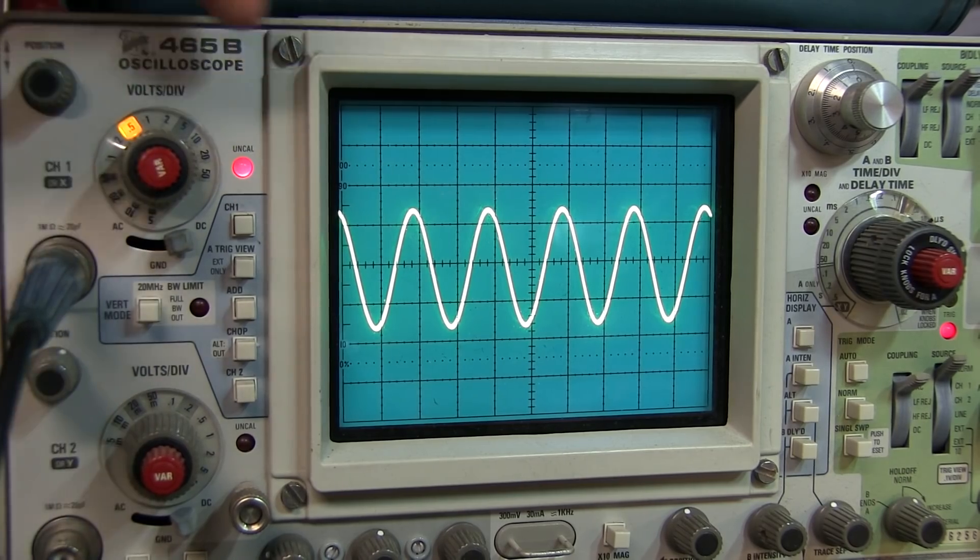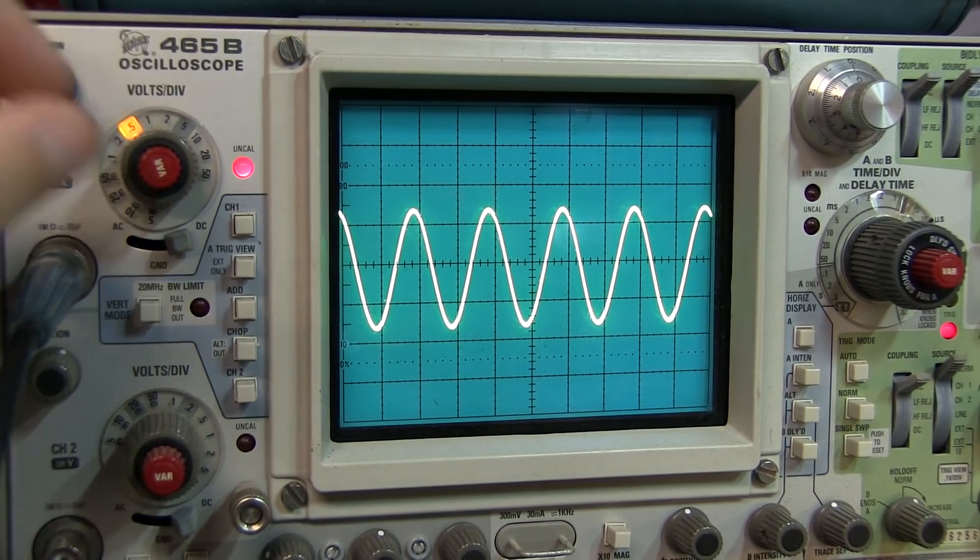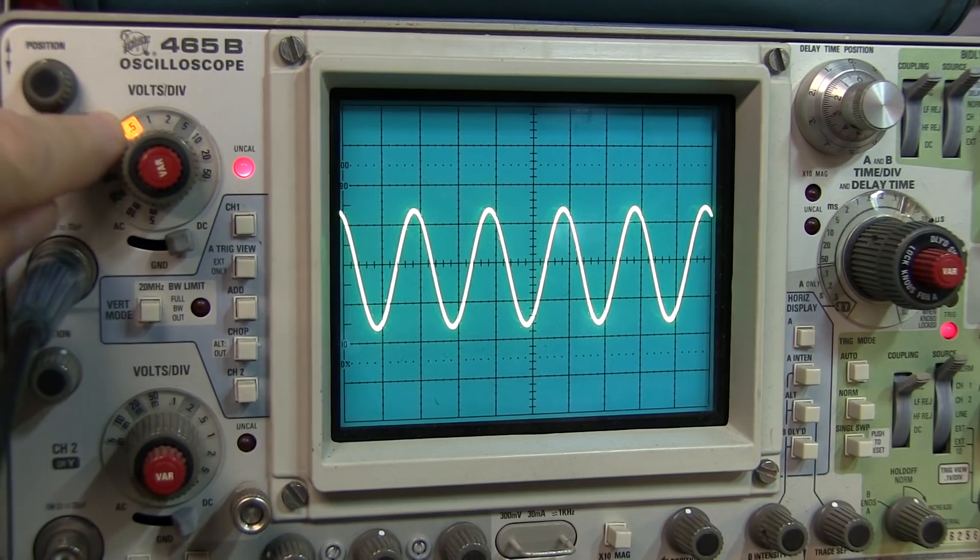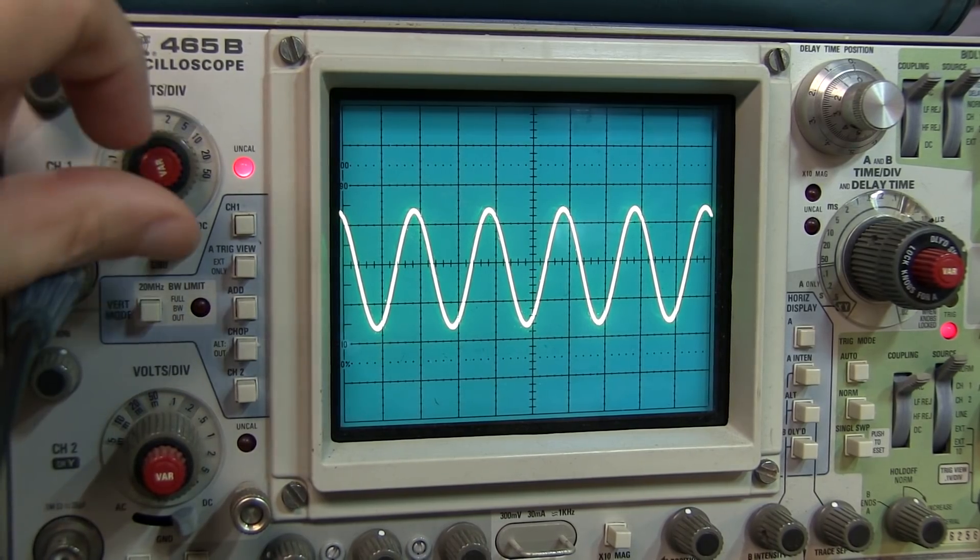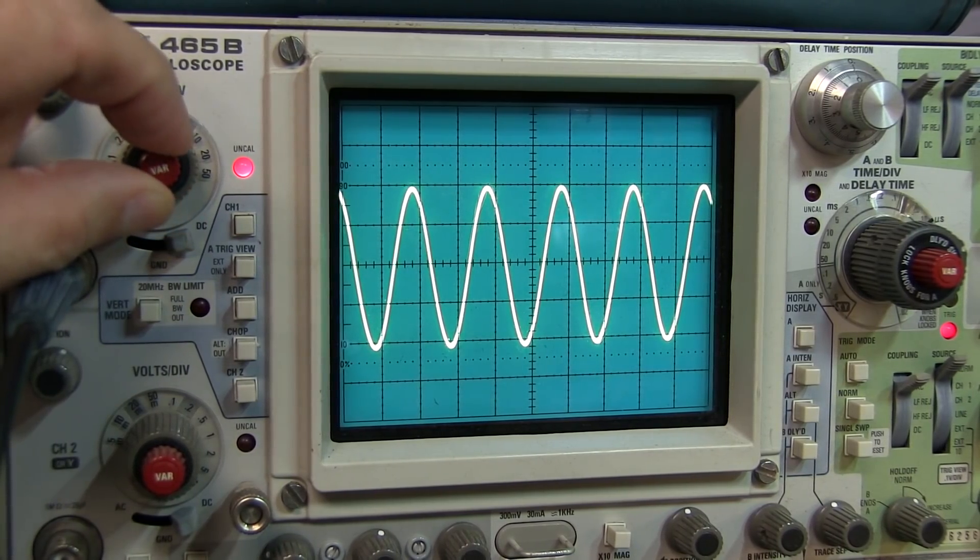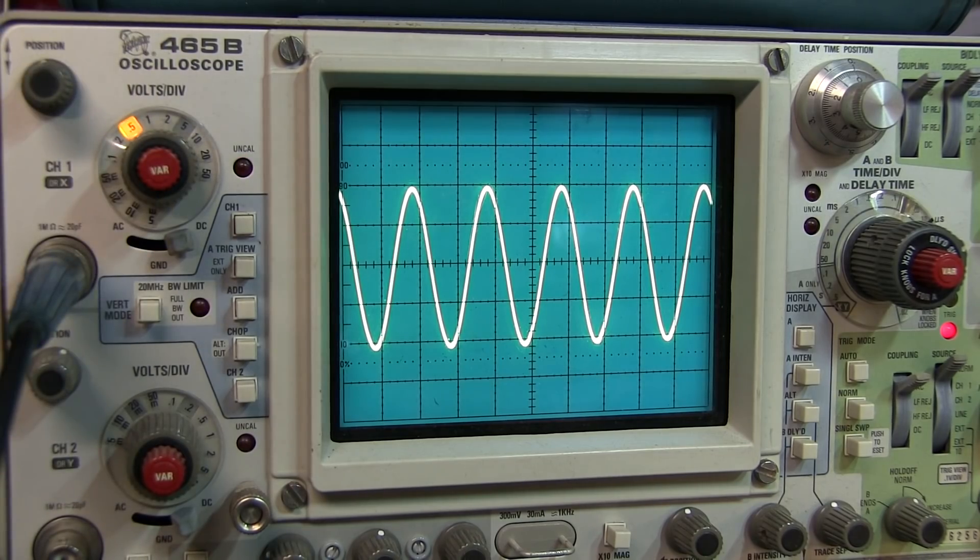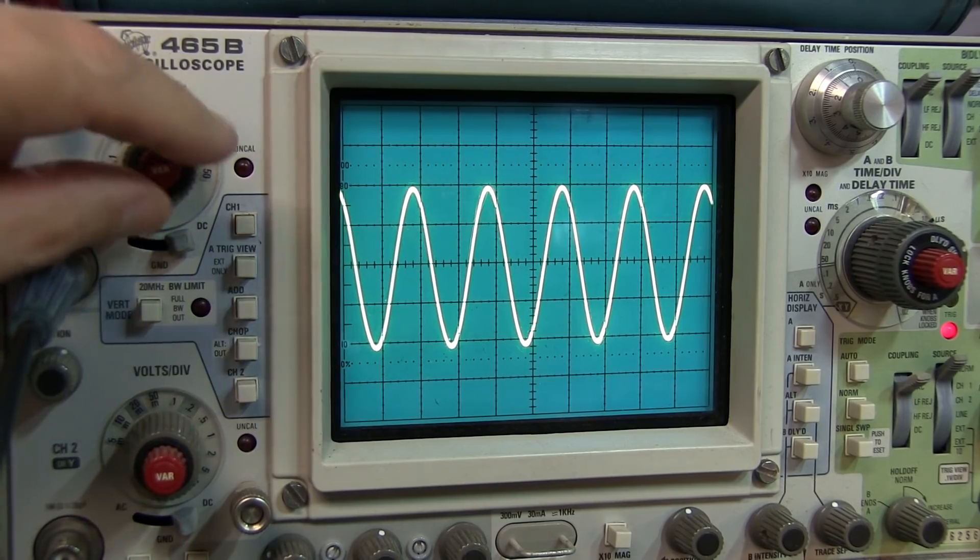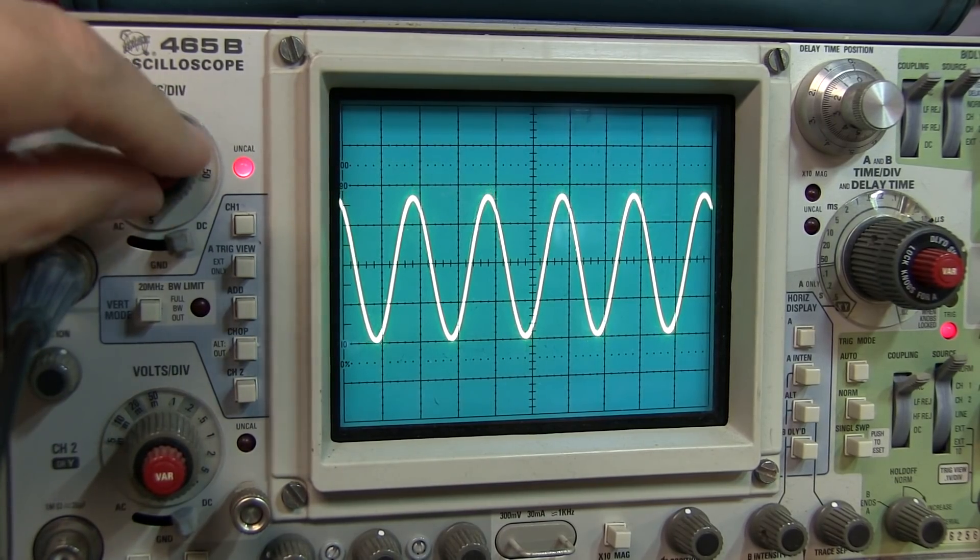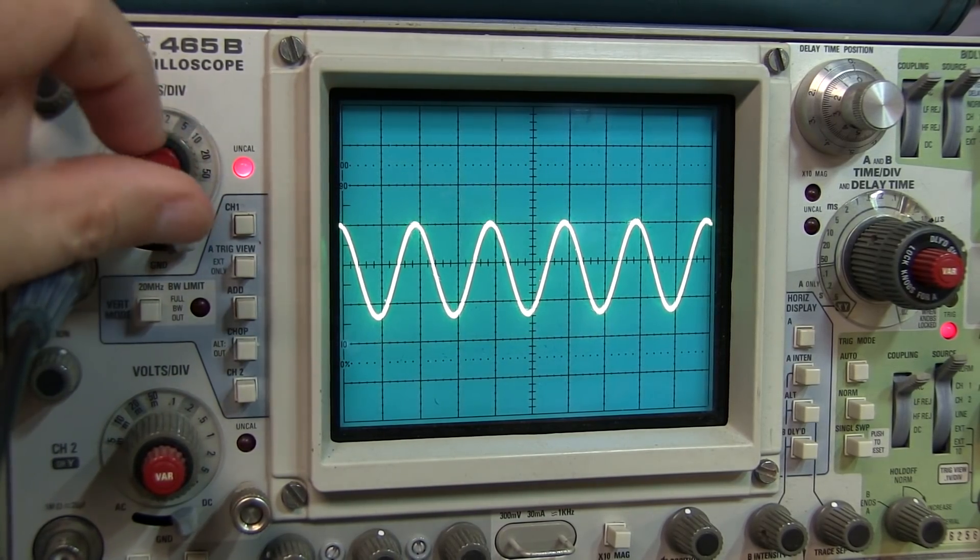In fact, you'll notice on this scope, the uncal light is now lit up. Now, in order to have this scale be the appropriate scale, that var knob needs to be turned all the way clockwise and typically clicked into a detent position. And now you're in a calibrated volts per division.